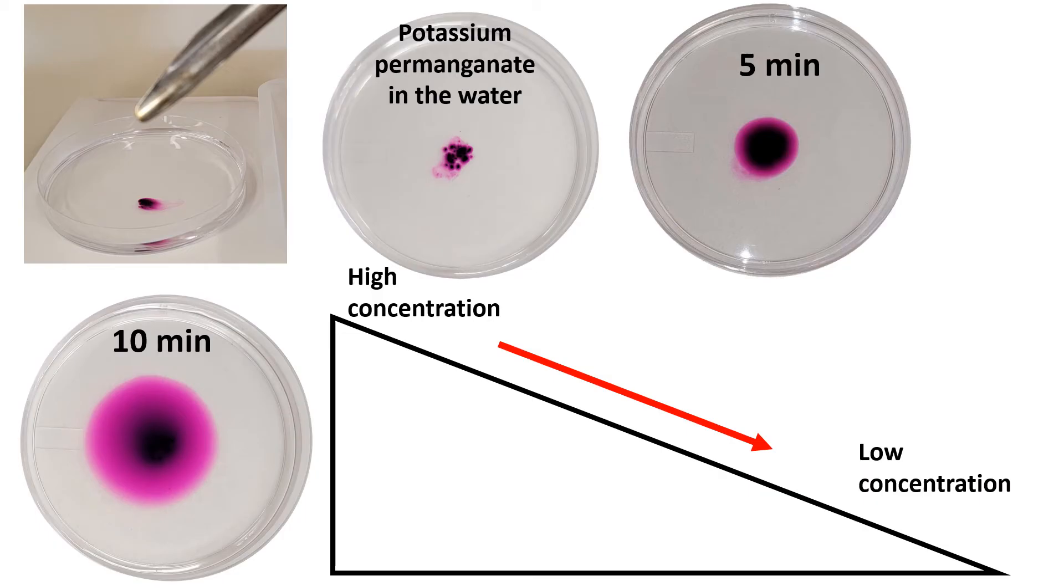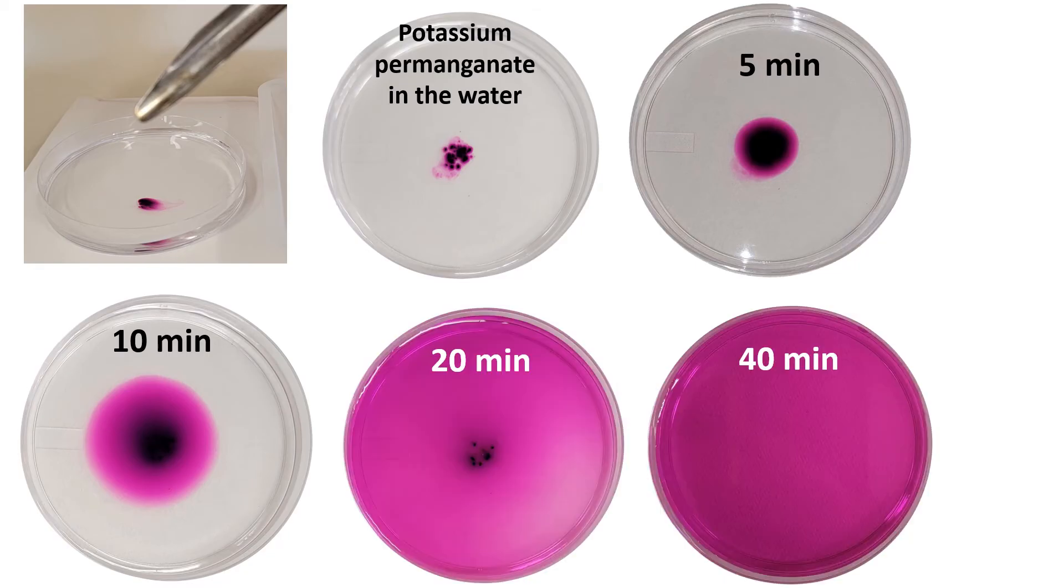Over time, these ions will diffuse throughout the water. Initially, the purple color will form a concentrated area around the crystal, gradually spreading out to form a more uniform color throughout the petri dish. The ions move down their concentration gradient, meaning they move from high concentration to low concentration. This results in an even distribution of potassium permanganate ions throughout the water, eliminating the concentration gradient.